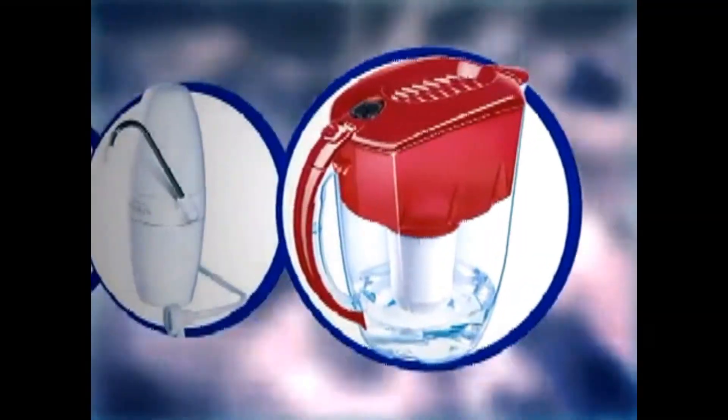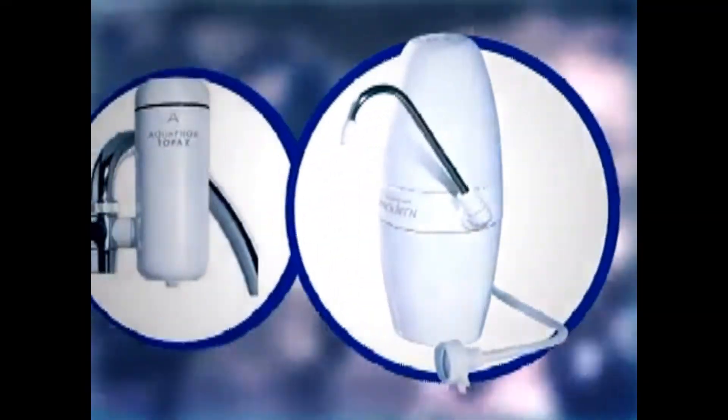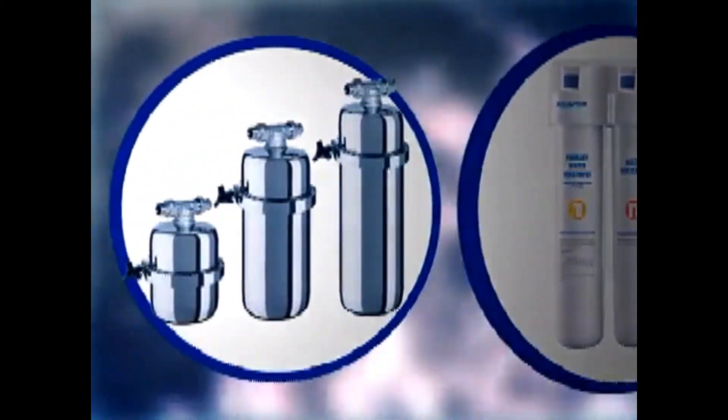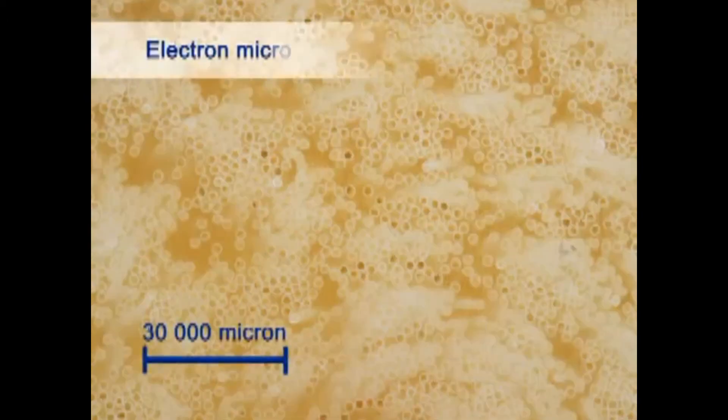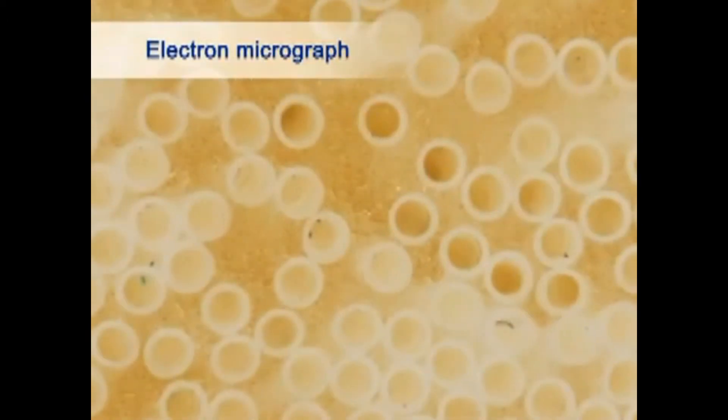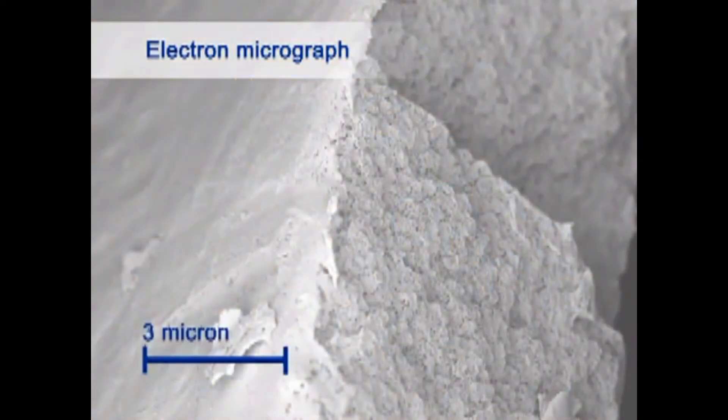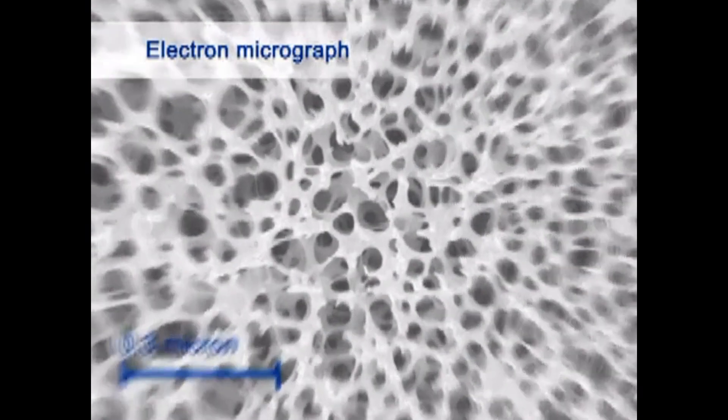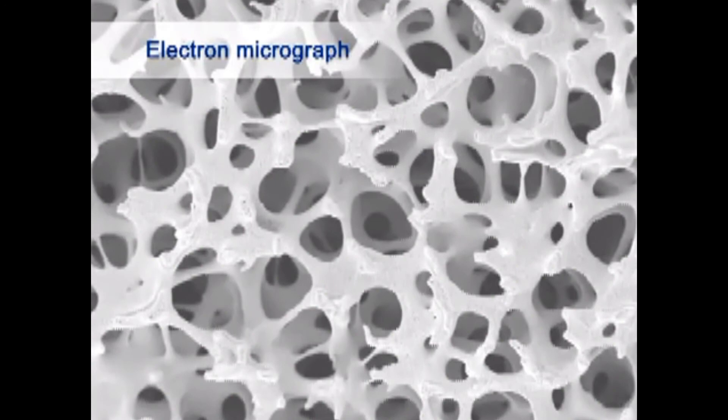including pitchers, faucet detachable, countertop, under the counter, and home point-of-entry water filters. Many of the Aquaphor products use state-of-the-art nano filtration hollow fiber membrane materials manufactured by leading international companies and by Aquaphor itself.